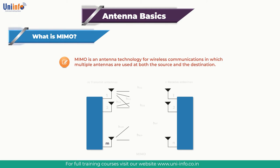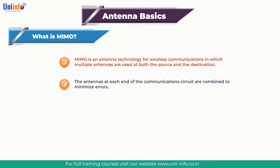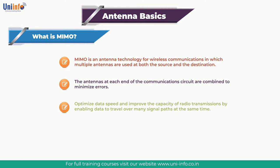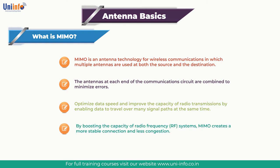MIMO is an antenna technology for wireless communication in which multiple antennas are used at both the source and the destination. The antennas at each end of the communication circuit are combined to minimize errors, optimize data speed, and improve the capacity of radio transmissions by enabling data to travel over many signal paths at the same time. Creating multiple versions of the same signal provides more opportunities for the data to reach the receiving antenna without being affected by fading, which increases the signal-to-noise ratio. By boosting the capacity of radio frequency systems, MIMO creates more stable connections and less congestion.